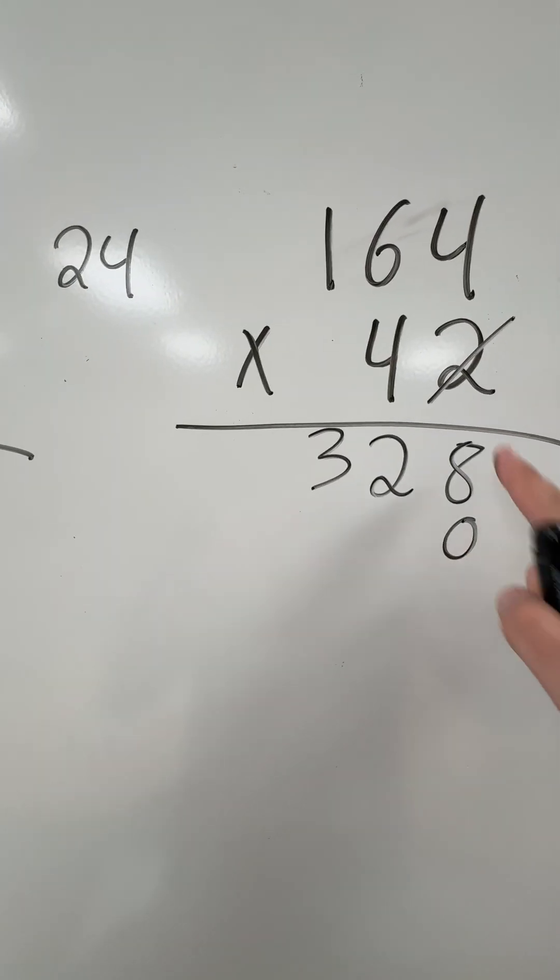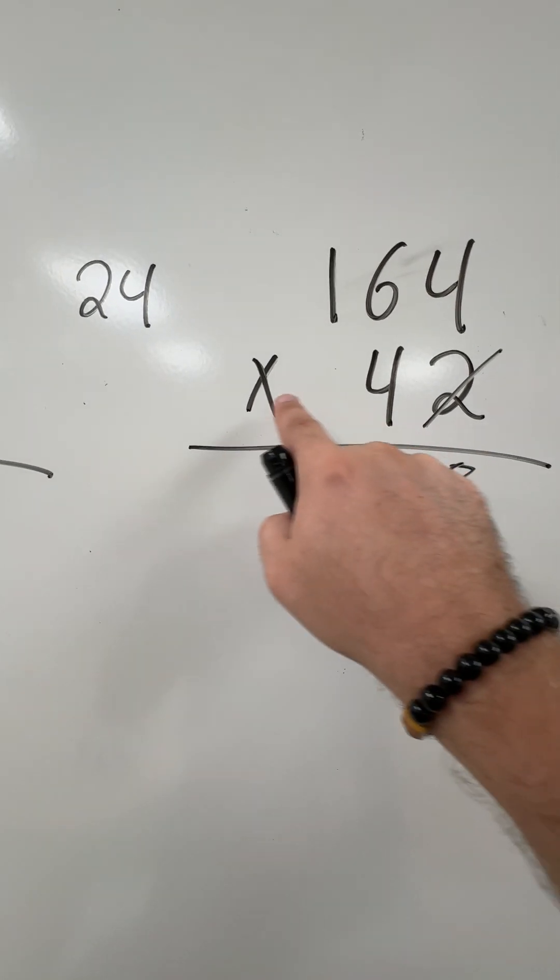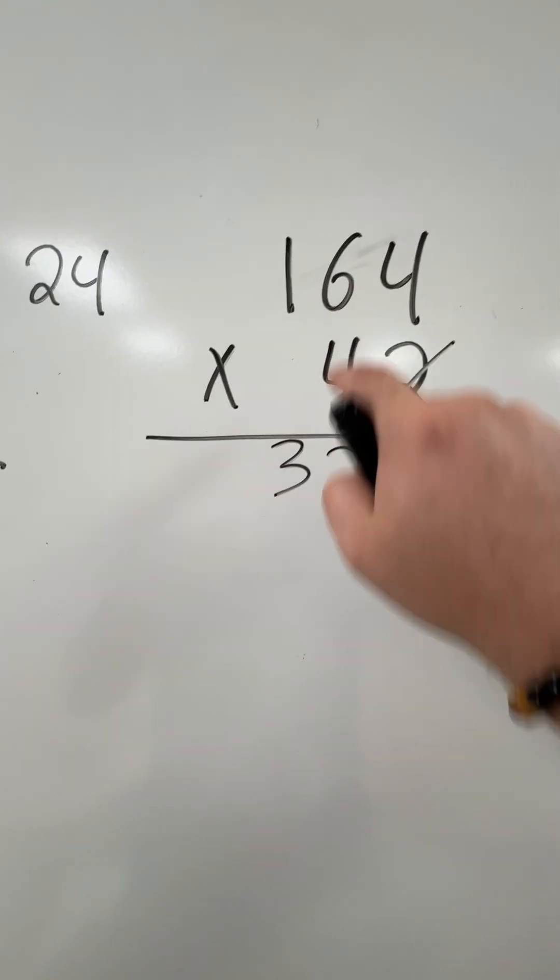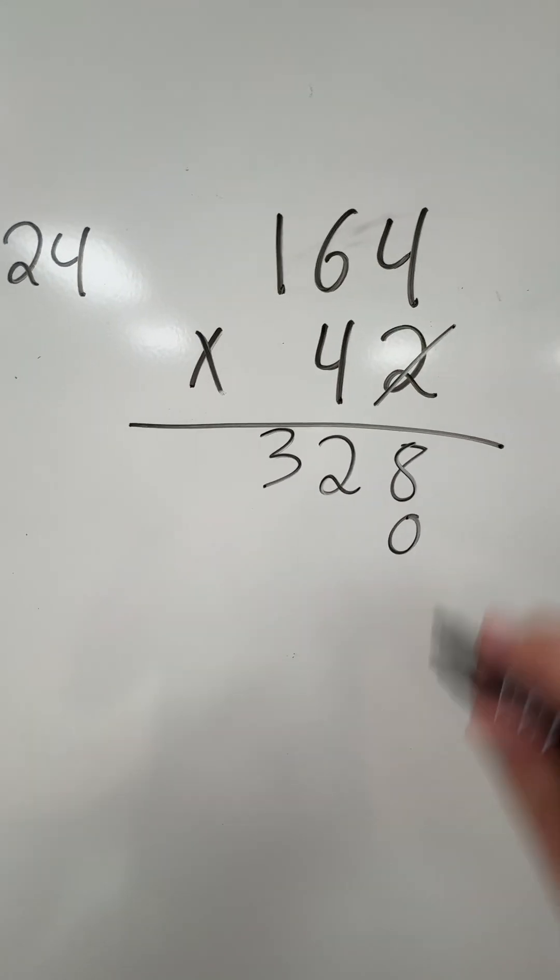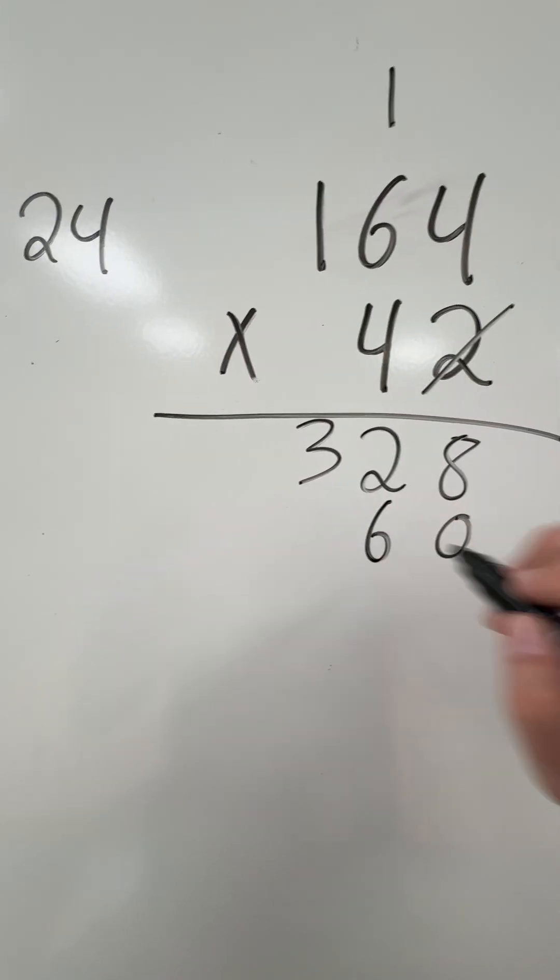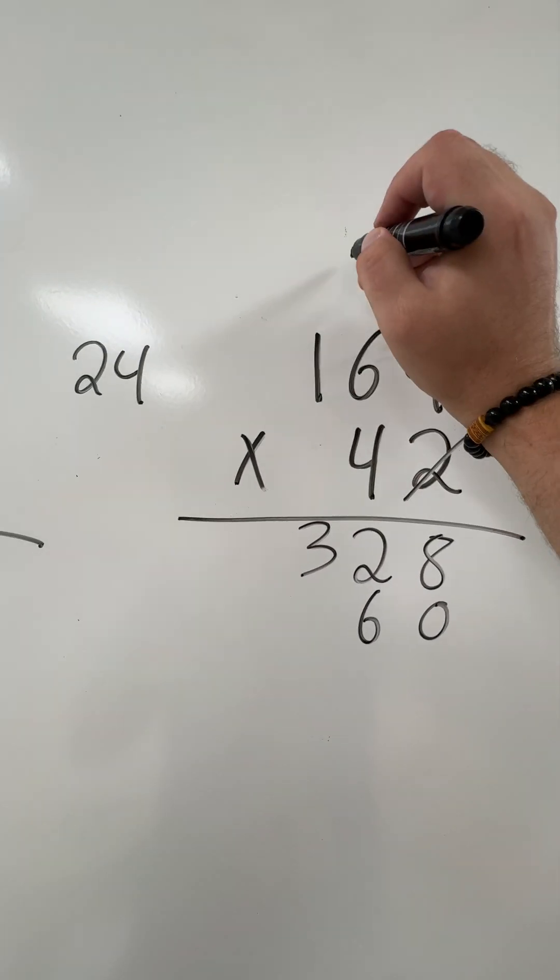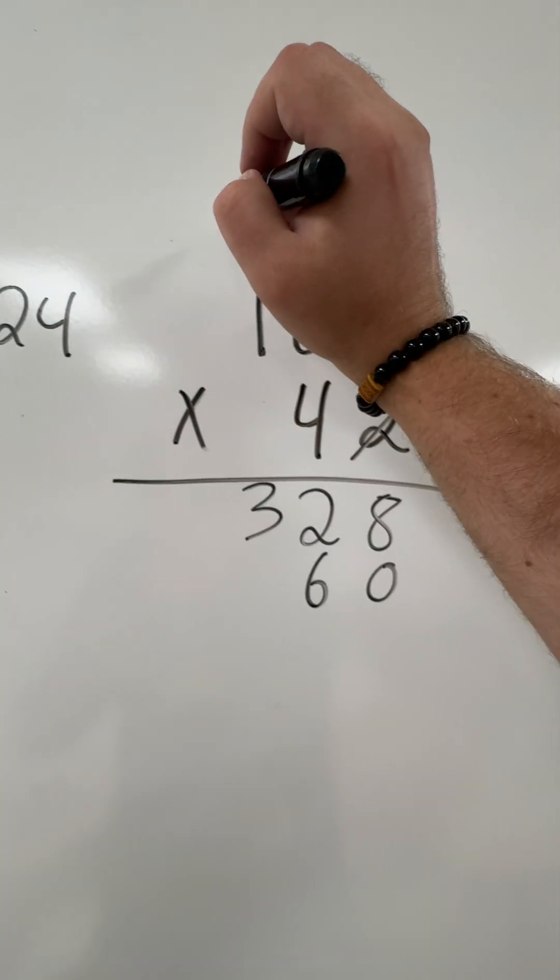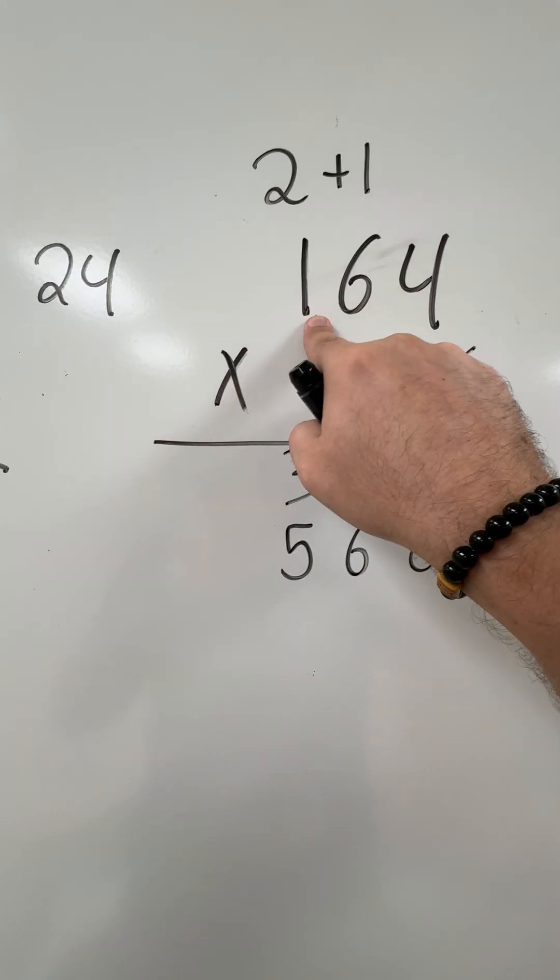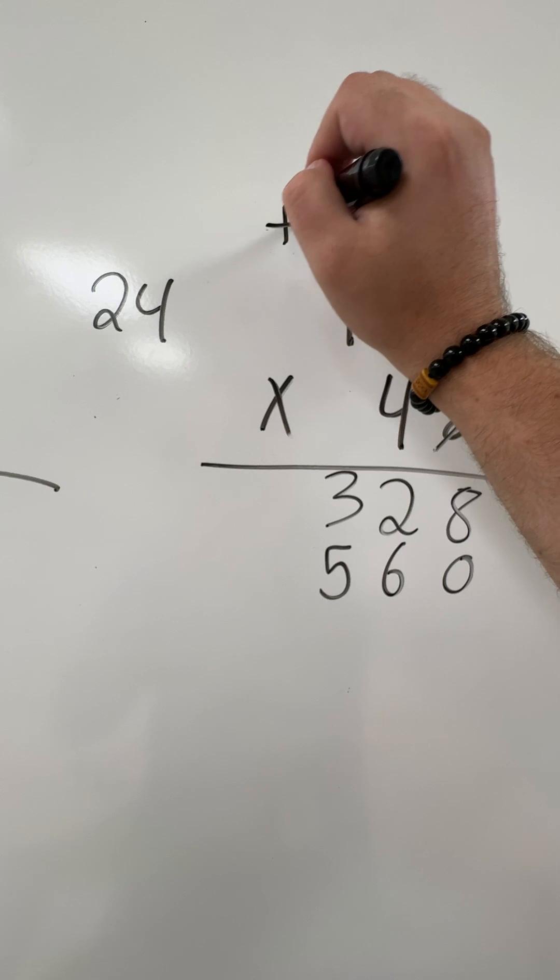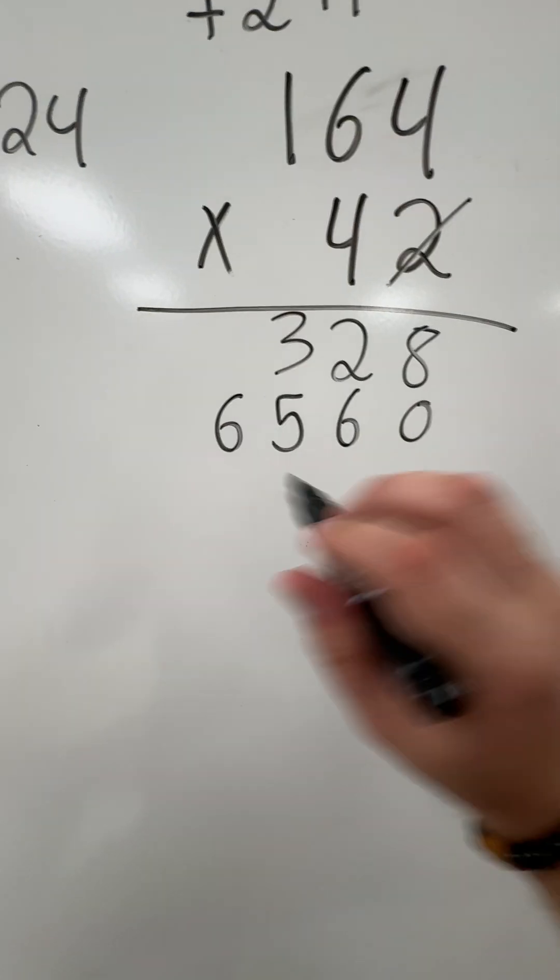And then I do everything just like I did with the two, but shifted over one place. So four times four, don't jump to the six. You still have to do the four. Four times four is going to be 16. I carry the one, I drop the six. Four times six is 24, plus the one is going to be 25. Carry the two, drop the five. Four times one is going to be four, plus two is going to be six. So I have my two different products.